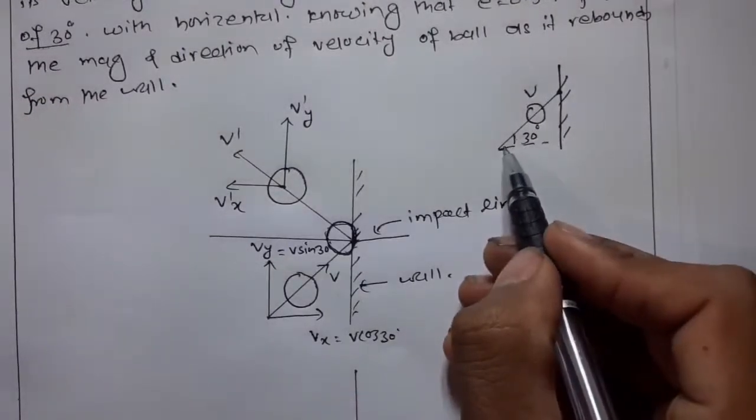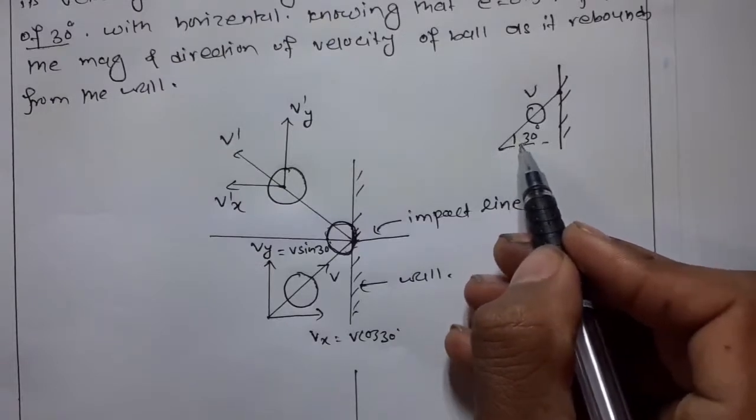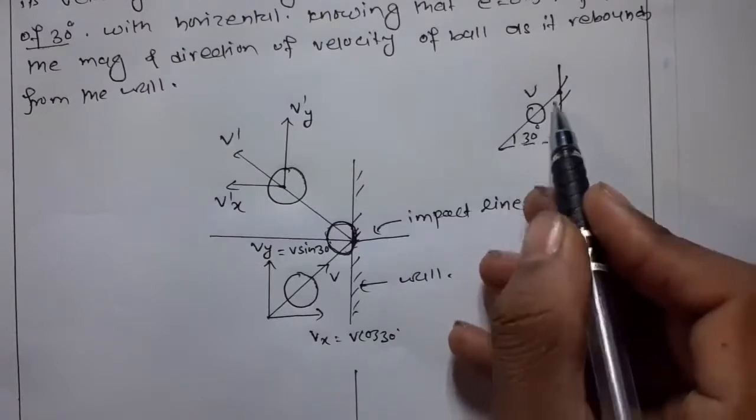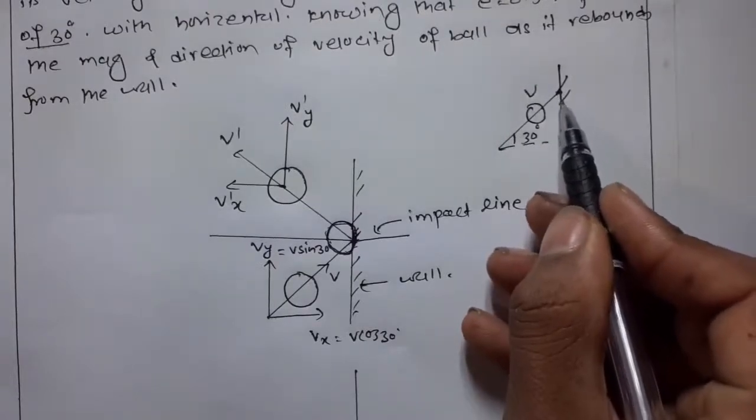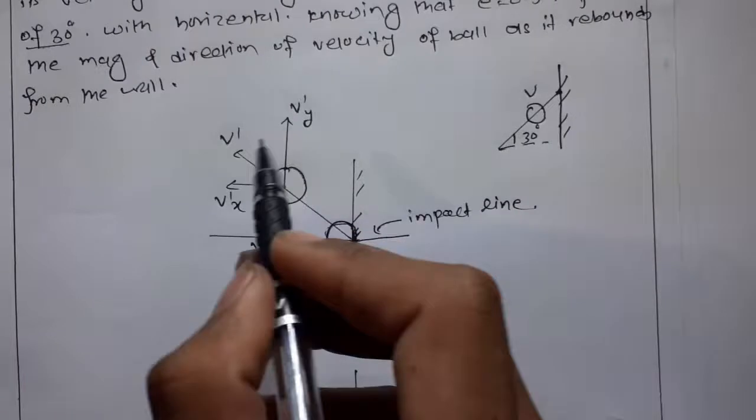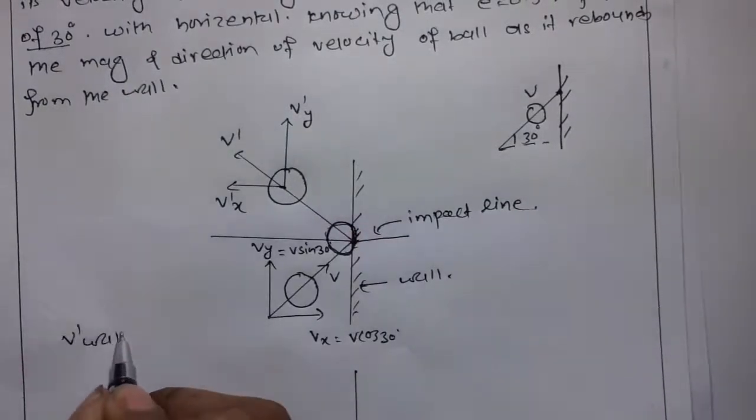Here is the figure. First, the ball has a velocity of v which makes an angle of 30 degrees with the horizontal and strikes into the vertical wall and rebounds with a velocity v dash.